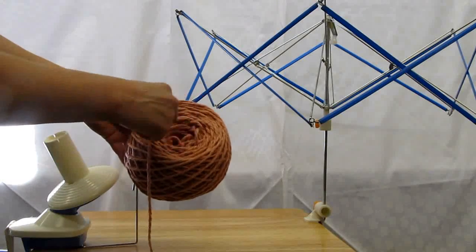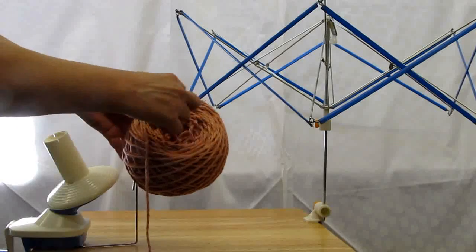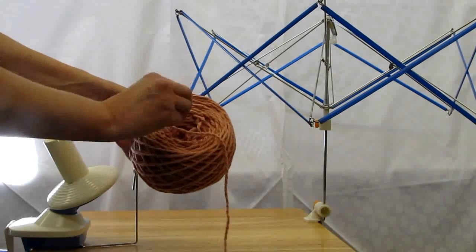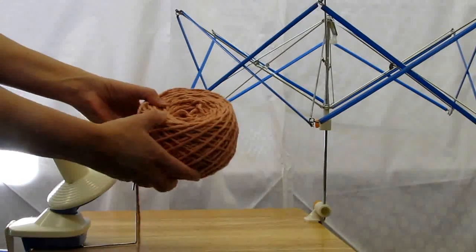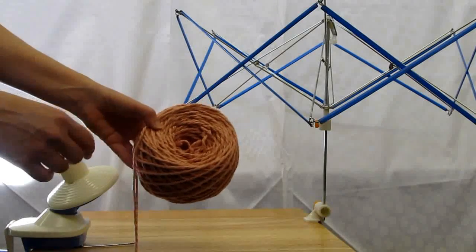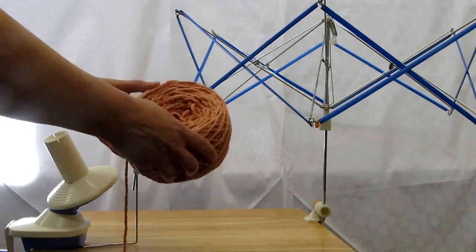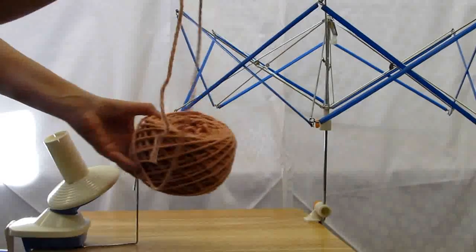as you're using it from the inside, eventually this outside collapses down and you end up with a pile of yarn. And I prefer just having the cake the whole way through. So I prefer pulling from the outside.